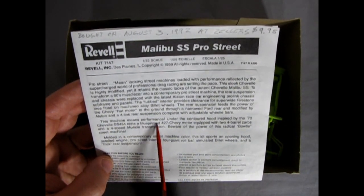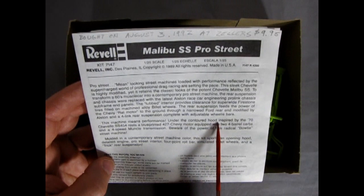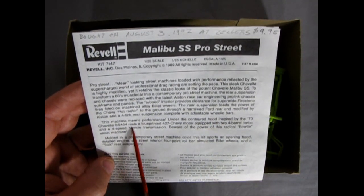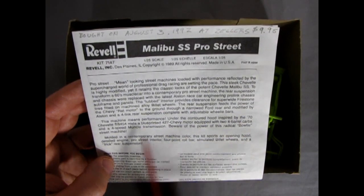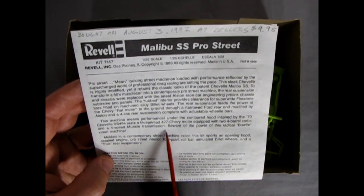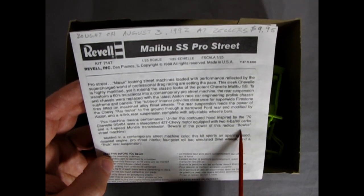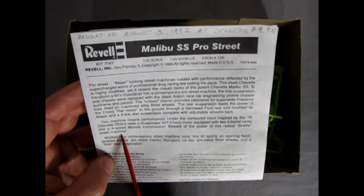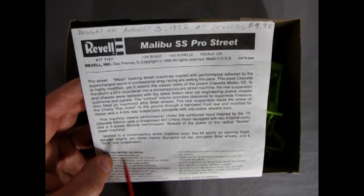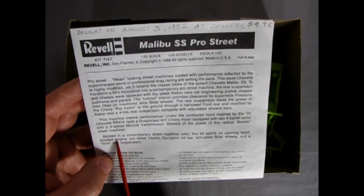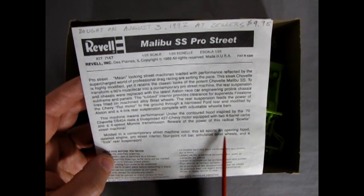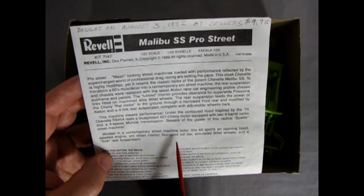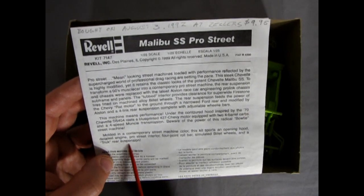The tubbed interior provides clearance for the super wide Firestone tires fitted on machined alloy billet wheels. The rear suspension feeds the power of the Chevy rat motor to the ground through a narrowed Ford rear end modified by Alston and a four link rear suspension complete with adjustable wheelie bars. Right on! This machine means performance. Under the contoured hood inspired by the 70s Chevelle SS 454 rests a blueprinted 427 Chevy motor equipped with two four barrel carbs and a four speed Muncie transmission. Beware of the power of this radical bowtie street machine.